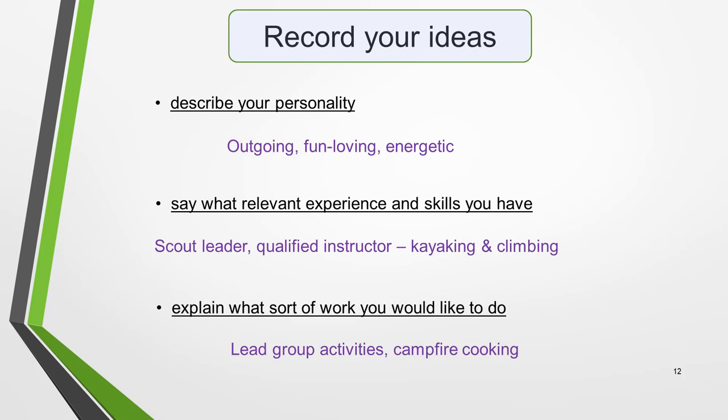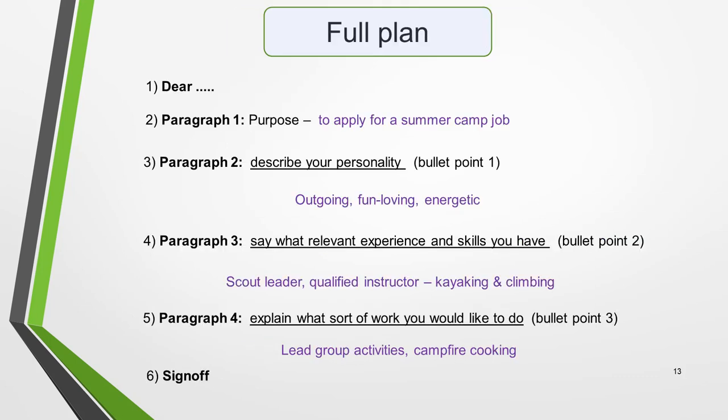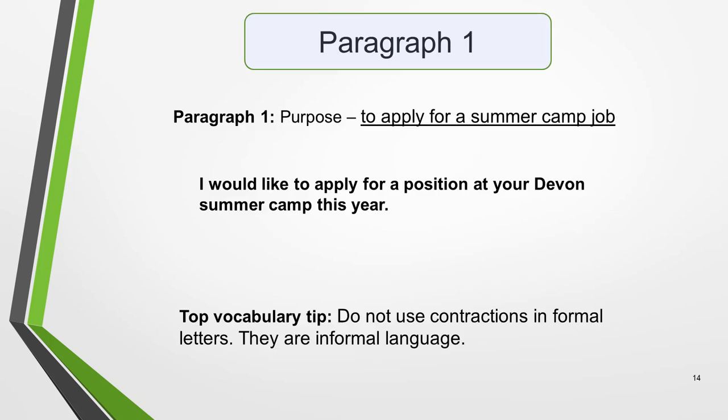We're now ready to start writing our letter. Here's our plan again, with all our notes added in. Pause the video if you want to spend a few minutes studying it. We've already decided on the greeting, so we'll start by writing paragraph 1. In paragraph 1, you must state the reason for writing the letter — its purpose — which in this case is to apply for a summer camp job. Many students make the mistake of missing this purpose sentence out, but it's very important — including it will gain you marks. It only requires one sentence, for example: 'I would like to apply for a position at your Devon summer camp this year.'